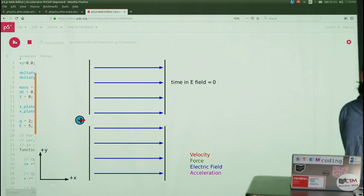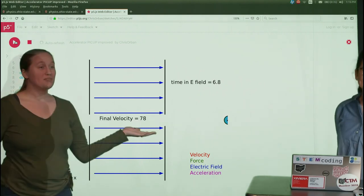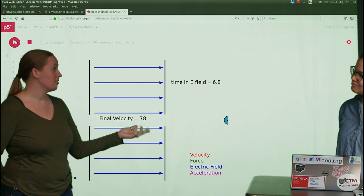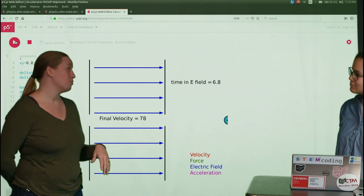So our particle going along enters the field, accelerates. So we got 78 as our final speed, which is faster than our previous result of 55.5.